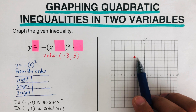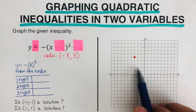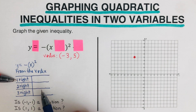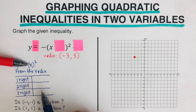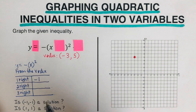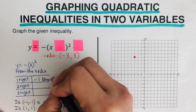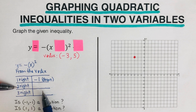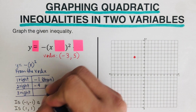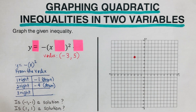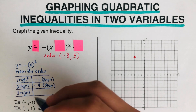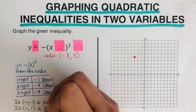We plug each value into x using the equation y = −x². One squared is 1, and with the negative in front, that's negative 1, so we go down. Two squared is 4, with the negative gives negative 4, so we go down. Three squared is 9, with the negative gives negative 9, so we go down again.